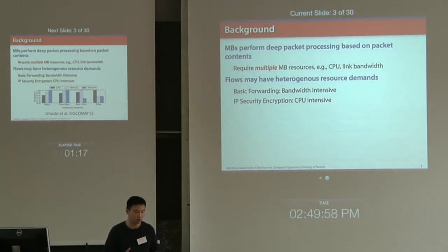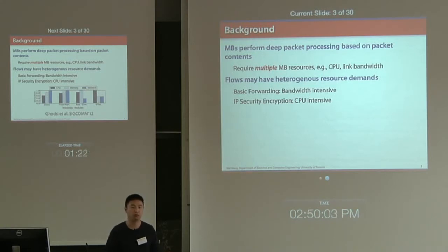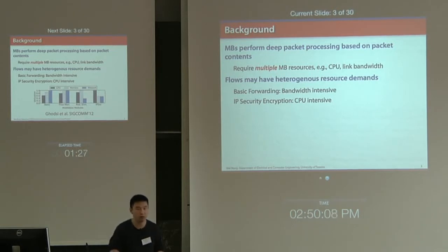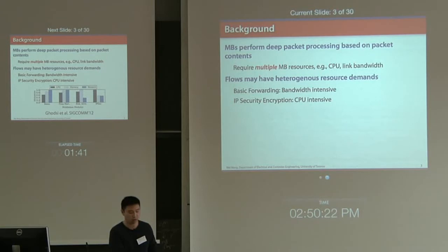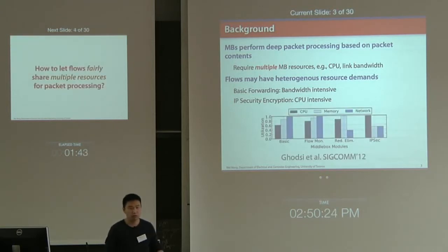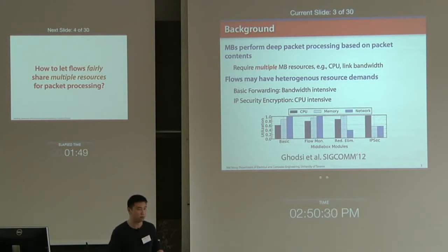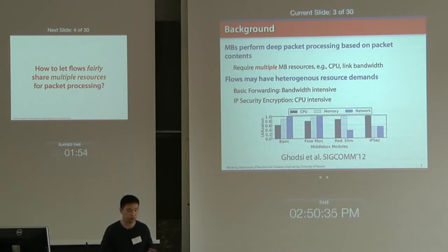Different flows may have different resource demands depending on the network functionality applied to them. For basic forwarding, you just forward the packet to the next hop, so it is usually bandwidth-intensive. But for IP security encryption, you need to apply encryption algorithms that consume a lot of CPU resources. Recent work has confirmed that depending on the middlebox module, resource consumption patterns are really different.